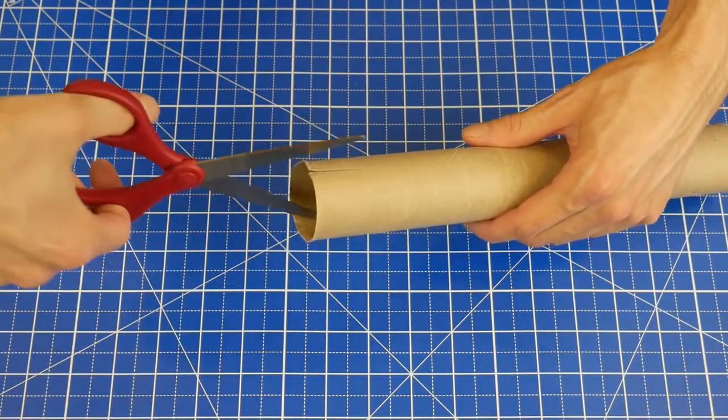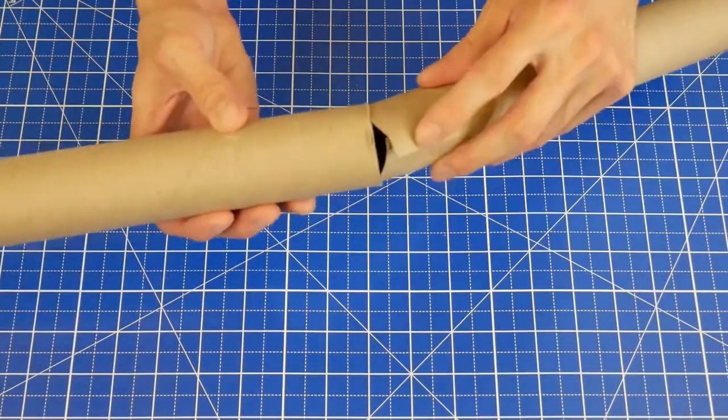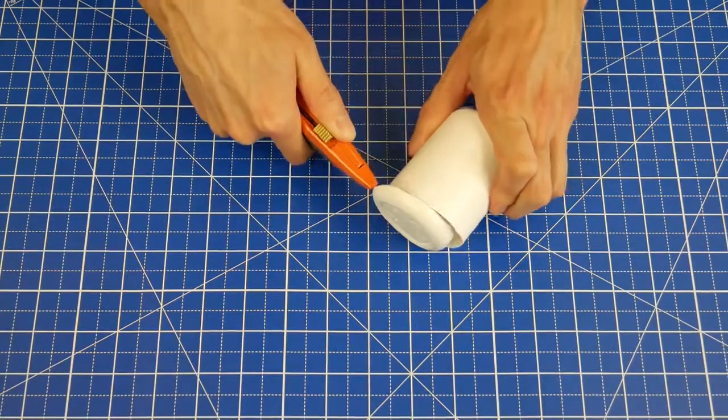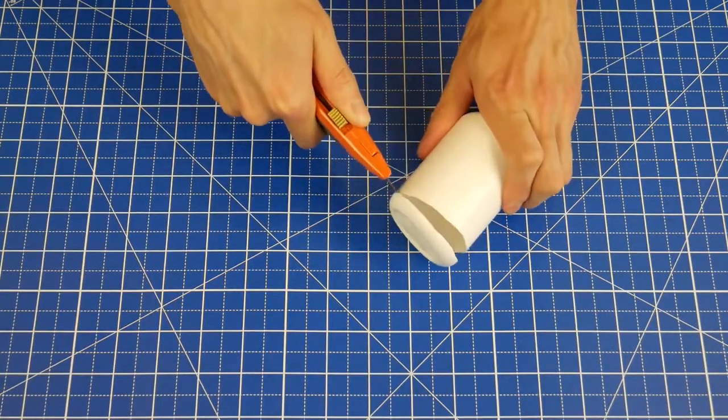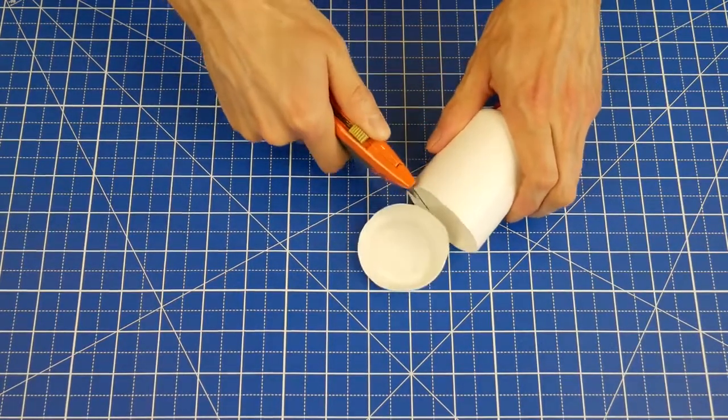Okay, let's get started. Begin by cutting a slit into one of the tubes. Insert that tube into another one. Using a box cutter, carefully cut off the bottom of a plastic bottle that has a screw-on lid.